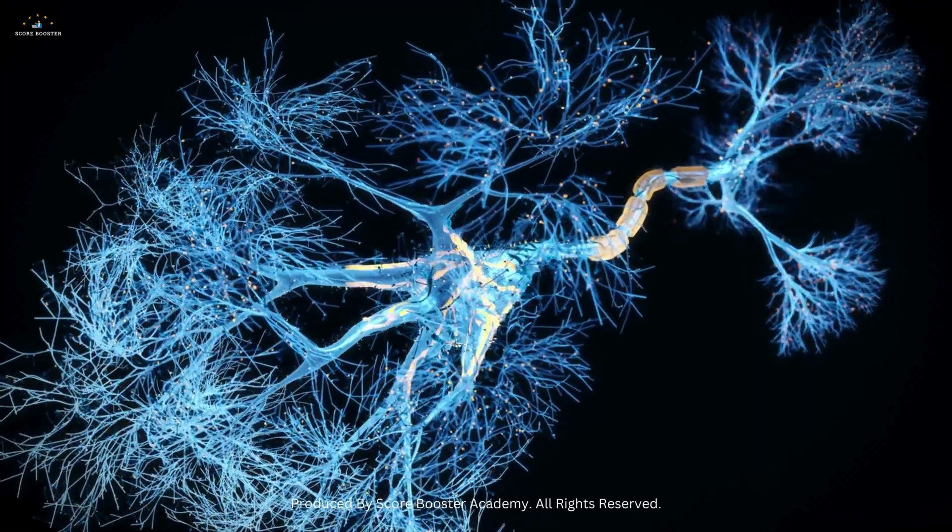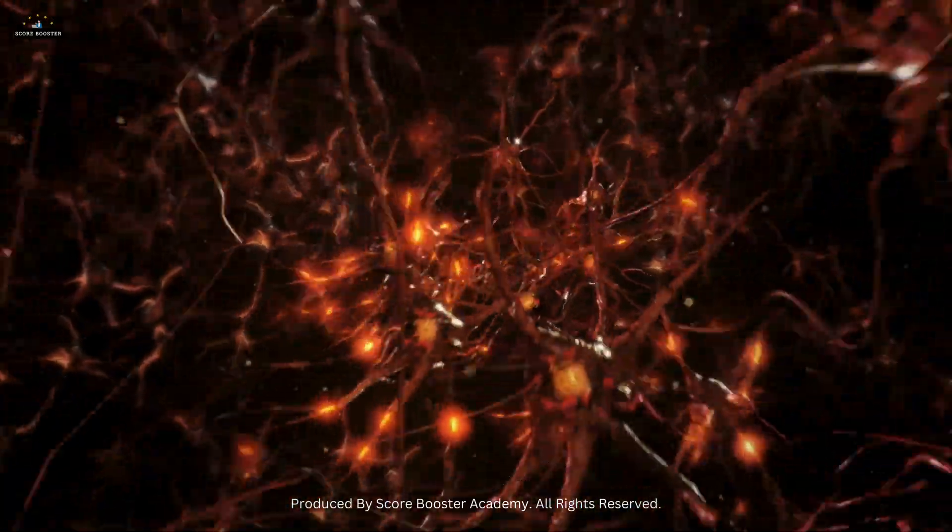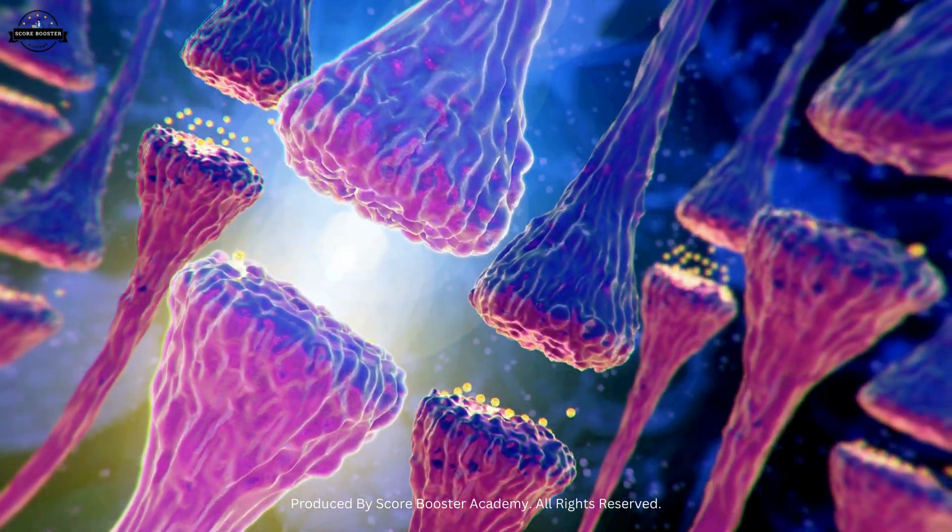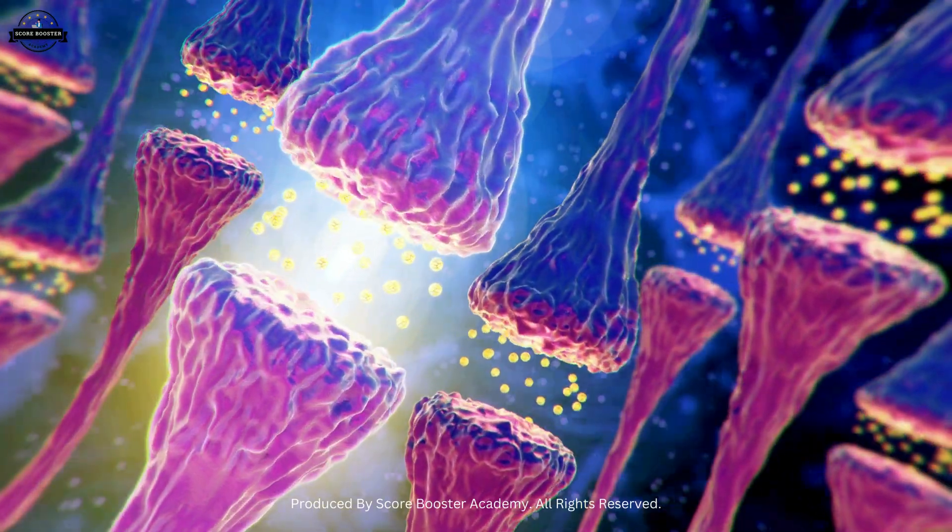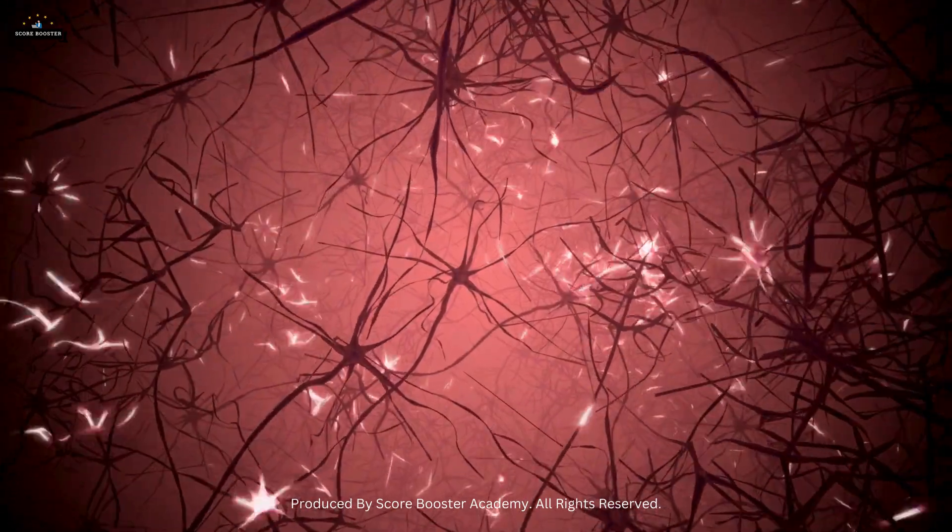This delicate balance between excitation and inhibition is what allows our nervous system to function with precision and coordination. The entire process of neurotransmitter release and reception occurs within milliseconds, showcasing the incredible speed and efficiency of synaptic communication.